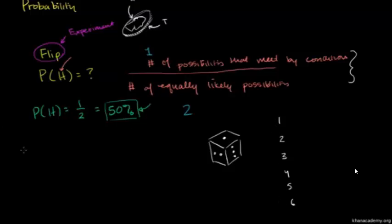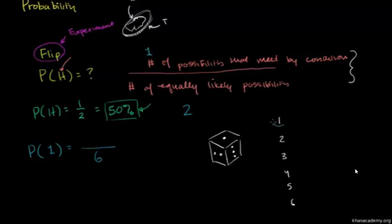So if I were to ask you: what is the probability, given that I'm rolling a fair die, of getting a one? What are the number of equally likely possibilities? I have six equally likely possibilities. And how many of those meet my condition? Only one of them meets my condition. So there is a one-sixth probability of rolling a one.